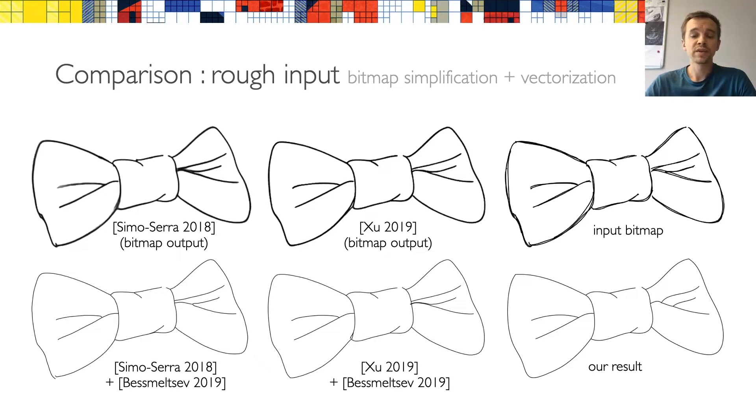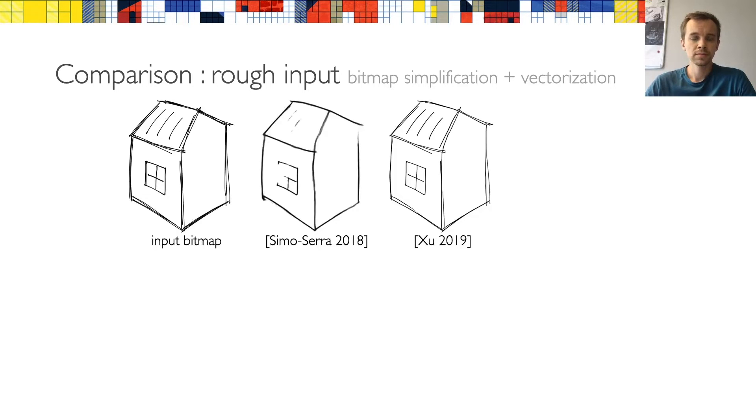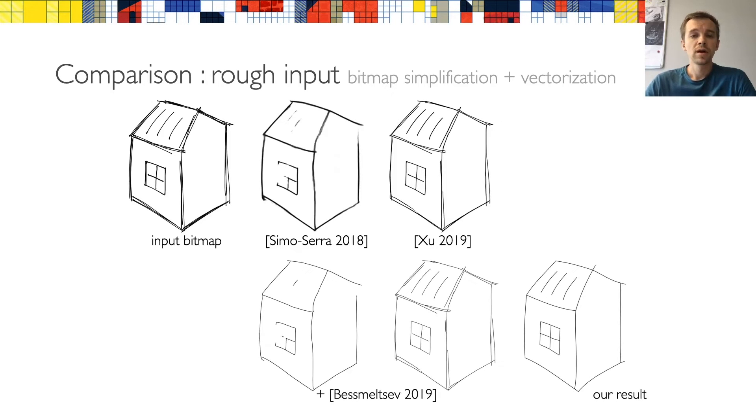As I already said in the beginning, we could try to correct the drawbacks of previous vectorization methods by first filtering the rough input using a bitmap simplification method. And indeed, on an input with more or less uniform amount of over-sketching, such as this one here, this often improves the result. However, notice that even here, the bitmap simplification struggles to produce the correct topology, and the resulting vectorization contains artifacts. This is even more evident on inputs with varying levels of sketchiness, such as this house. Here, the bitmap simplification methods either fail to reproduce all details, or fail to merge some of the strokes. Our method can handle even this kind of input.